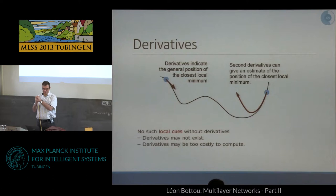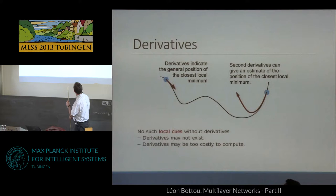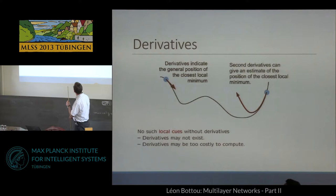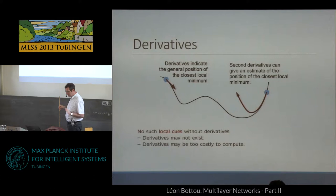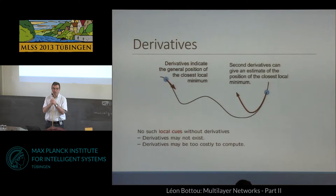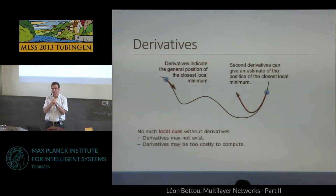First, there is optimization with derivatives. The derivative indicates the general position of the closest local minimum. If you have a second derivative, you can say you have a kind of local quadratic ball, and that gives an idea of what it is — it doesn't always exist. The derivatives can be difficult to compute, and there are many problems where you don't have them. This is why we always try to smooth things in neural nets to have derivatives, because in the convex world, you can do quite a lot of non-smooth optimization with hinge loss. If you're non-convex and non-smooth, you're in a difficult domain.